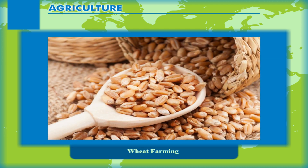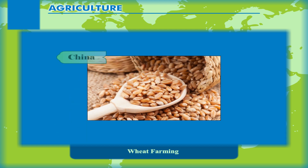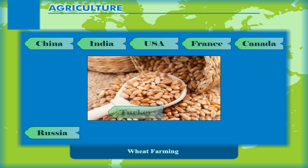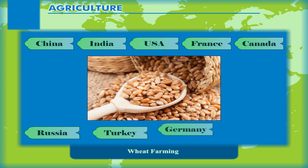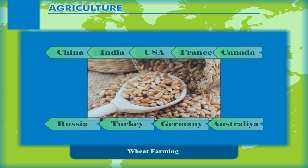In North America, the wheat varieties are classified into winter and spring wheat. China, India, USA, France, Canada, Russia, Turkey, Germany, Australia, etc. are the major producers of wheat.